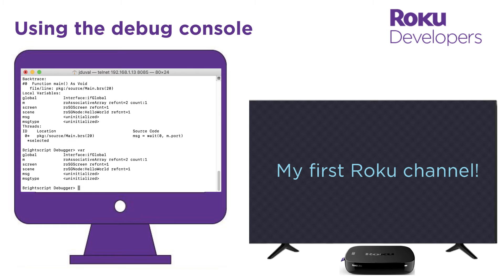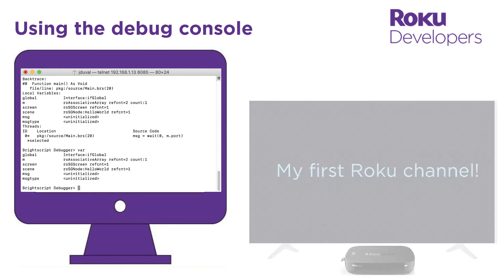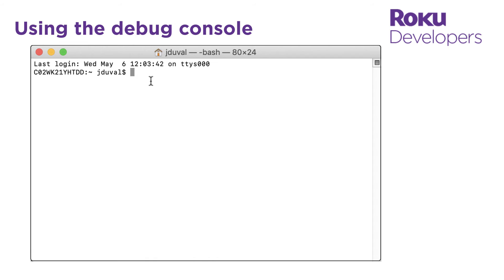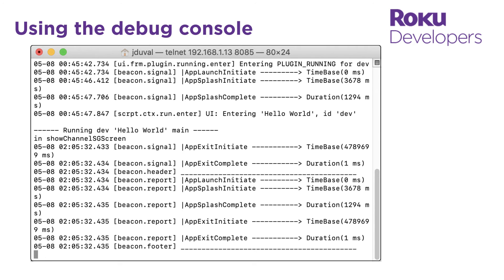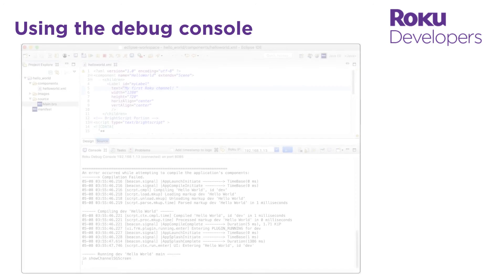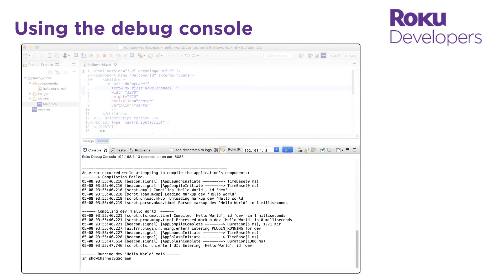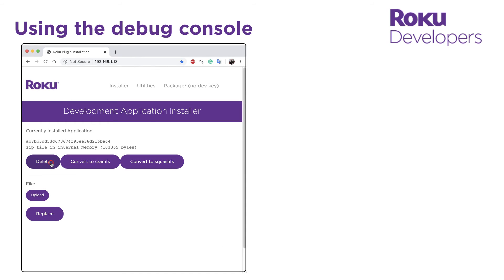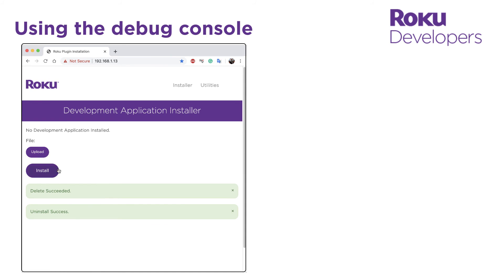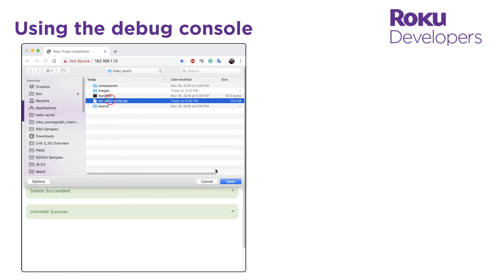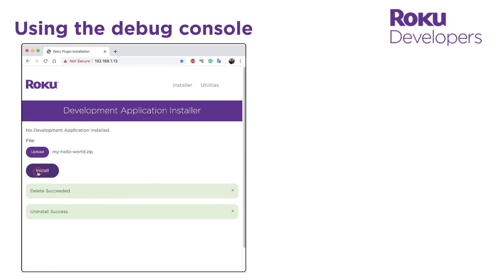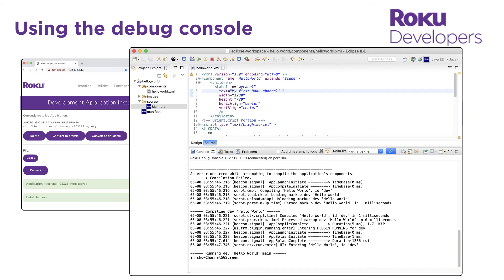Let's use the debug console while running our updated Hello World sample channel. Open a terminal or console application on your computer, enter telnet, the IP address of your Roku device, and then port 8085. This is the port number for the BrightScript console on the Roku device. You can also access the debug console from the Roku plugin in the Eclipse IDE. Go back to the development application installer, click delete, upload, then select your myhelloworld.zip file, and then click install. In the debug console, view the output from the sample channel.